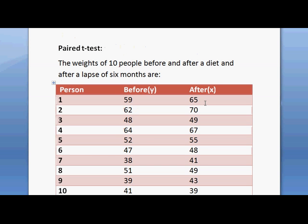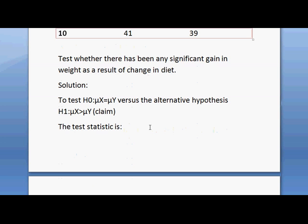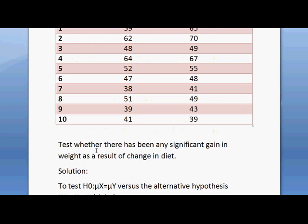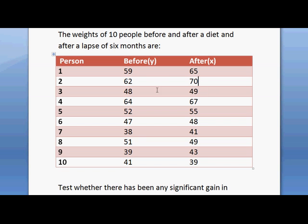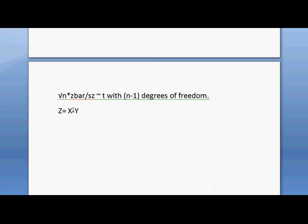That is, if we subtract 59 from 65, we will get Z for the first person. Likewise, 70 minus 62 is the difference of weight for the second person.